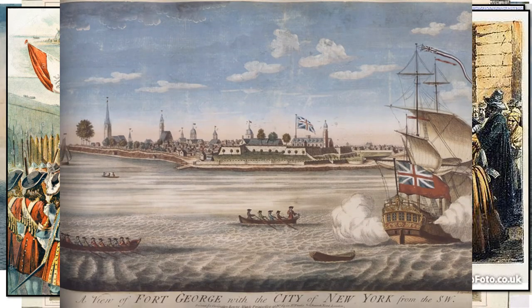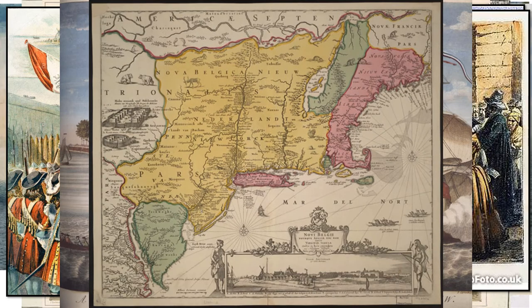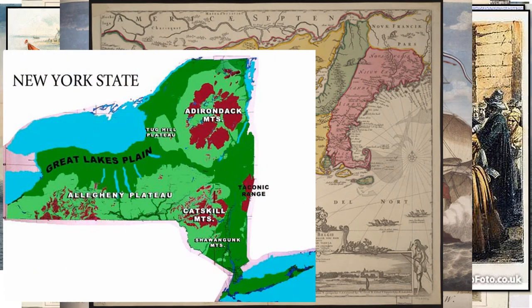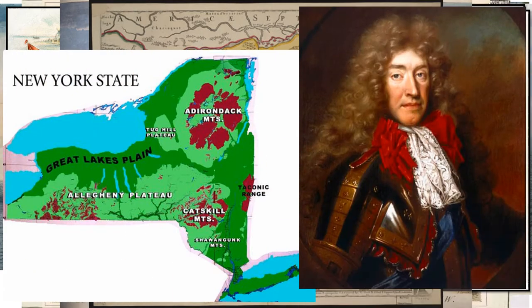New Netherland was then divided into the colonies of New York and New Amsterdam. The name New York comes from James, Duke of York, who replaced the name New Amsterdam.